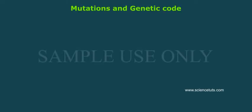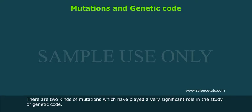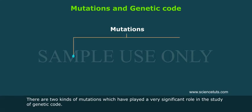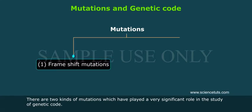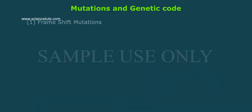Mutations and Genetic Code. There are two kinds of mutations which have played a very significant role in the study of genetic code. These are: 1. Frameshift mutations, and 2. Base substitutions or amino acid replacements.